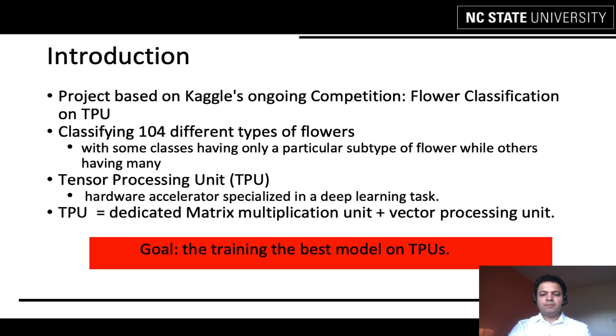We are classifying 104 different types of flowers. Some have only a particular subtype of flower while others can have many subtypes. The requirement for the project is to use Google's hardware accelerator specialized in deep learning tasks. A TPU, unlike a GPU, has a dedicated matrix multiplication unit plus a traditional processing unit. So the goal of this competition is finding the best model that works on TPUs.